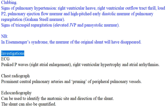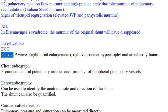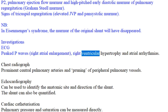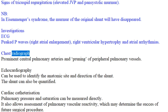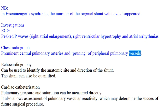Investigations: ECG findings include peaked P-waves indicating right atrial enlargement, right ventricular hypertrophy, and atrial arrhythmias. Chest radiograph shows prominent central pulmonary arteries and pruning of peripheral pulmonary vessels.